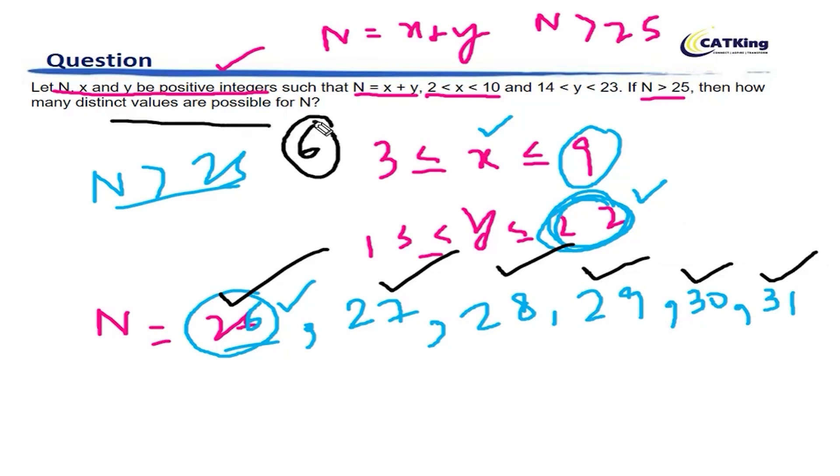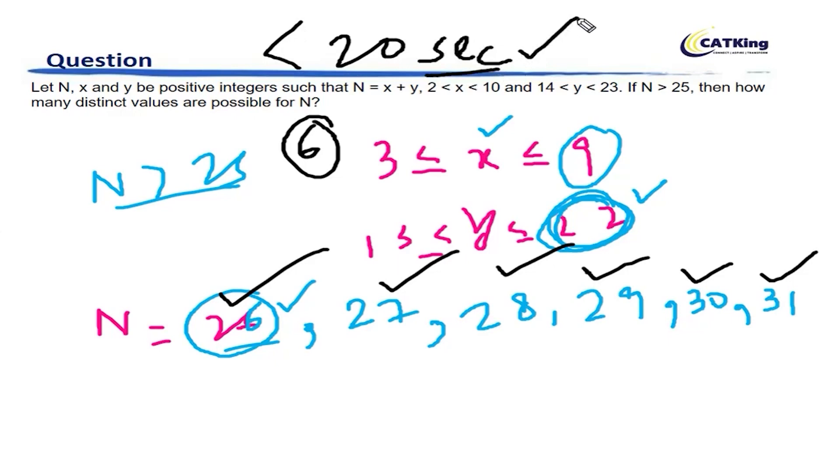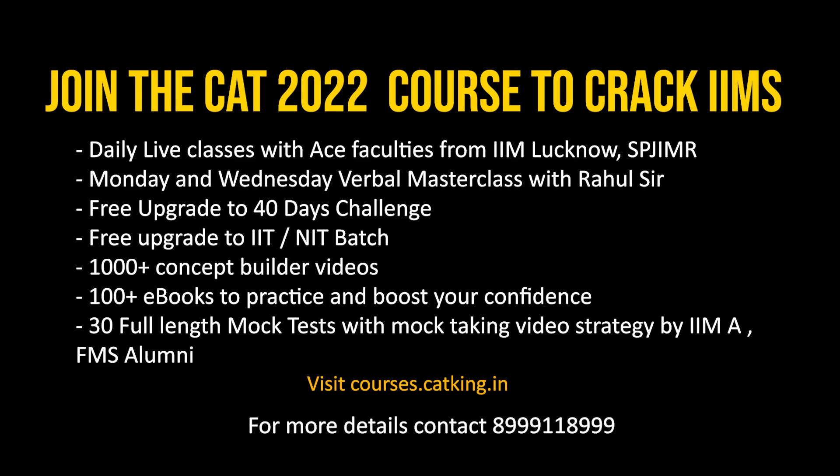6 distinct values are possible for N. Again, a very simple counting exercise, a commonsensical question. Okay? If you try and go into the fancy ways of solving this question, you might get stuck. But if you just solve it commonsensically, you can very well solve this question in less than 20 seconds time. Amazing, isn't it? I hope this is clear to you and I hope I have solved it in the most easiest manner possible. Alright.